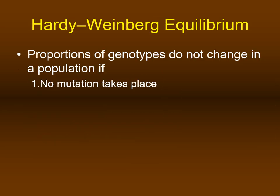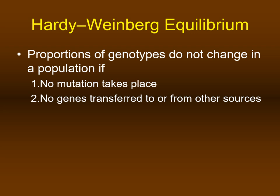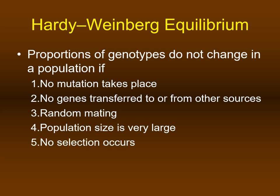The cornerstone concept of population genetics is Hardy-Weinberg equilibrium. A population exists in Hardy-Weinberg equilibrium when the proportions of genotypes do not change. Five key conditions are required: no mutations, no gene flow in or out of the population, random mating, a very large population size, and no selection — meaning the environment should be stable and not impose any selective pressure. As you can imagine, these conditions are very unrealistic.